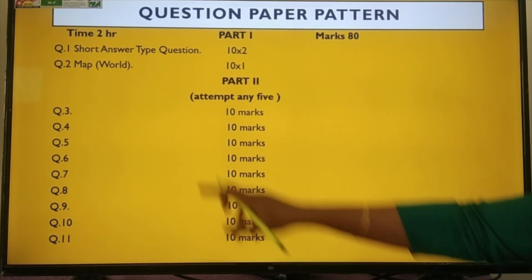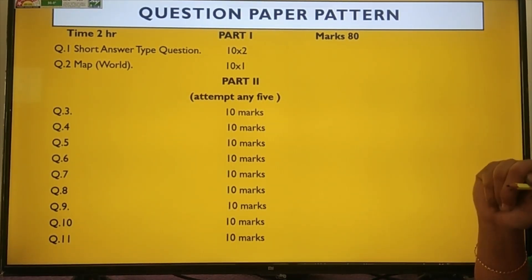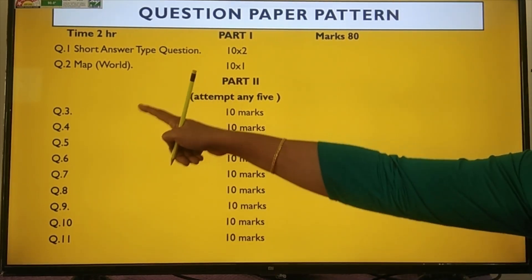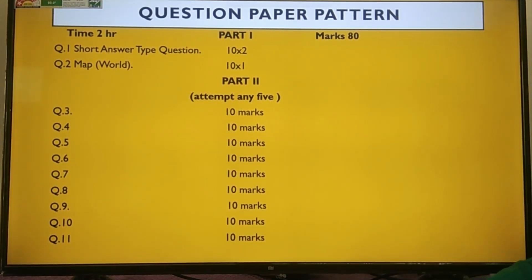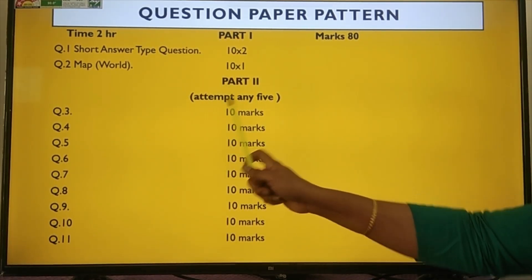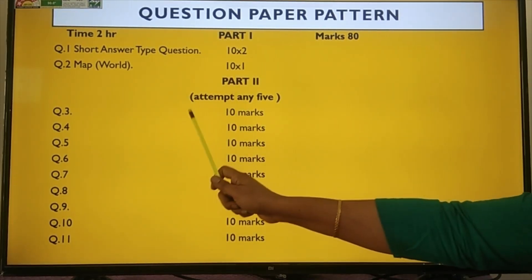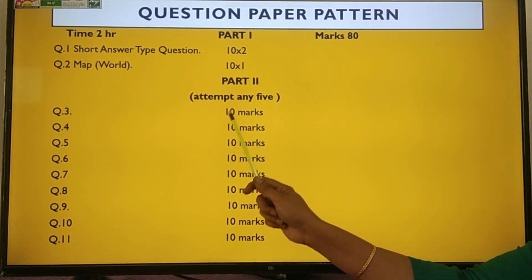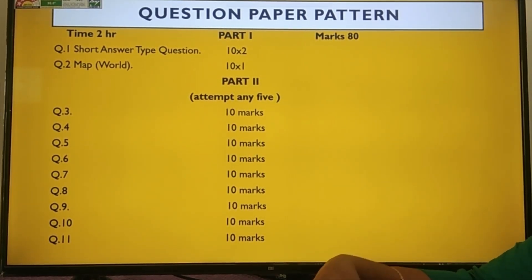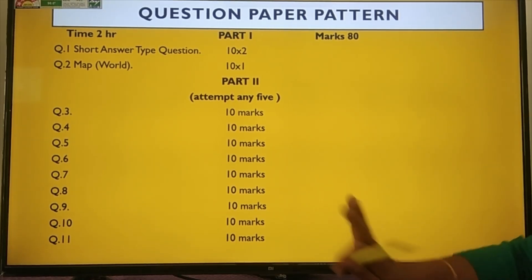Second part: all together 9 questions will be there. As we discussed in the content, there are 9 sets. From each set, one question is allotted. So altogether 9 questions, and here is choice - you have to attempt any 5 out of 9 questions. Each question carries 10 marks and each question may have subdivisions (not necessary, may or may not be) - A, B, C, D. So this is the description of the question paper.